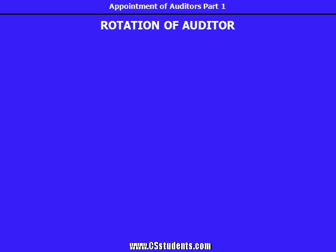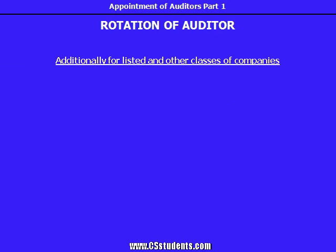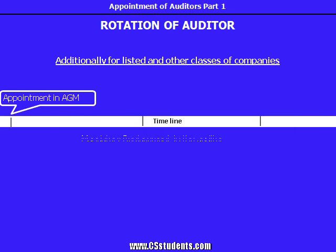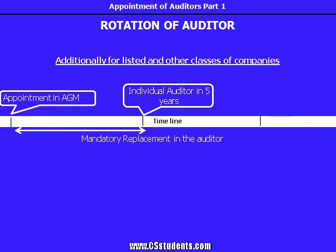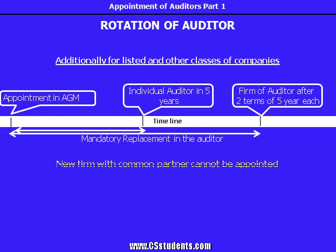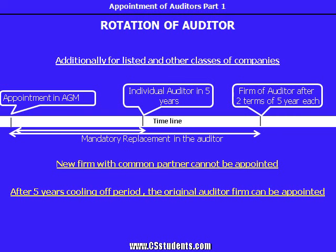For listed companies and certain other class of companies, an individual auditor will be appointed for one term of five years. An auditor's firm can be appointed for two terms of five years, or up to ten years. A new auditor firm with common partners cannot be appointed. But after a five-year cooling off period, the original auditor firm can be appointed.